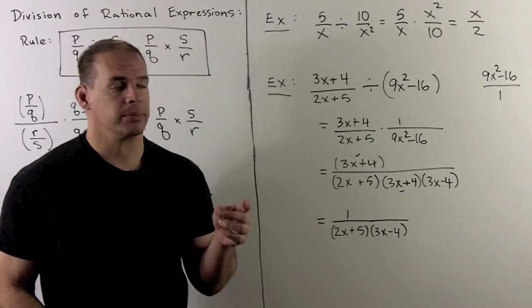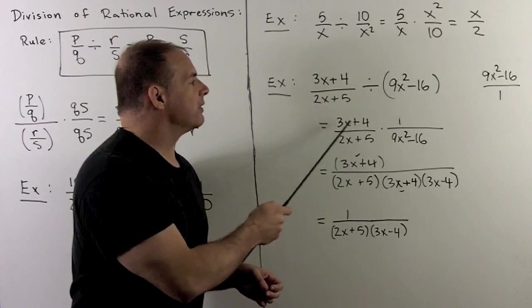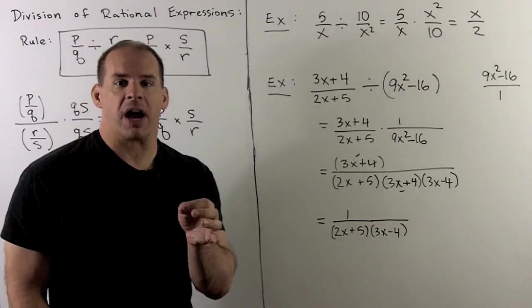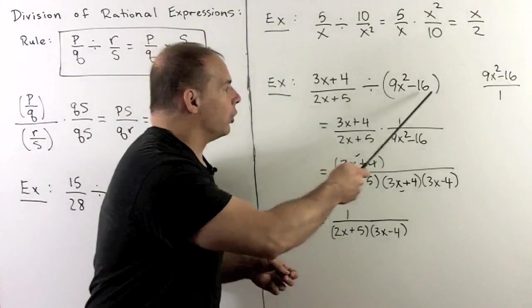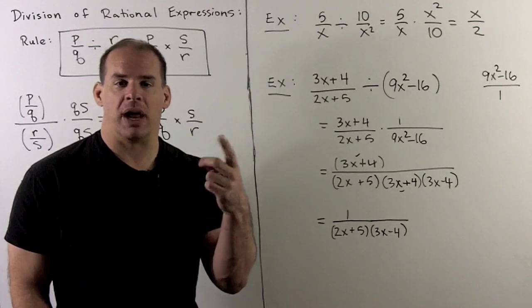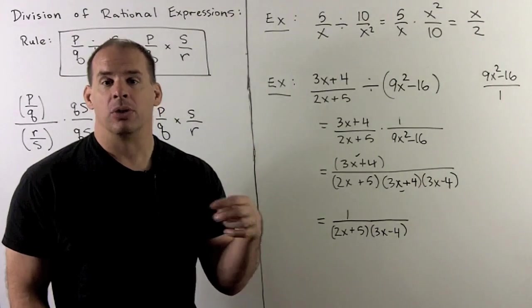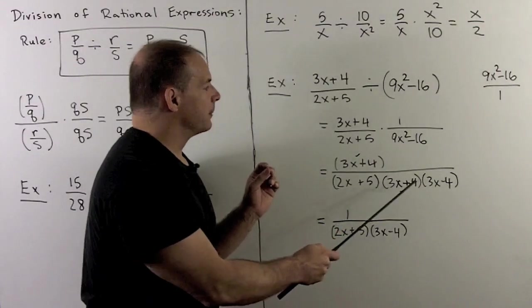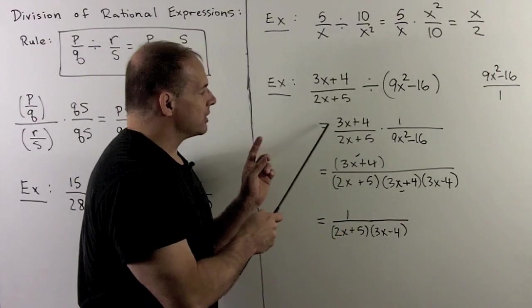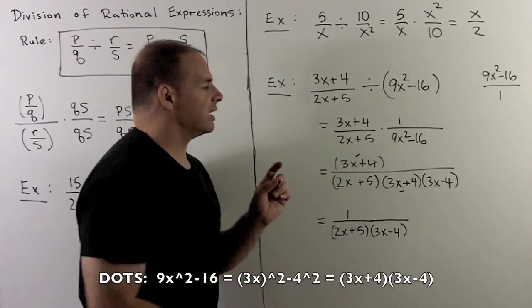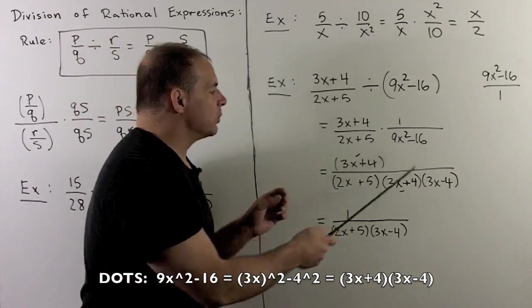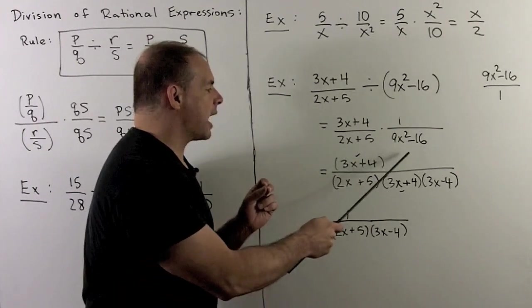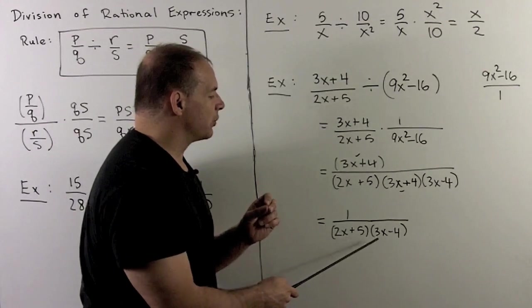Moving up to polynomials, let's try 3x plus 4 over 2x plus 5 divided by 9x squared minus 16. Now note, 9x squared minus 16, not in fraction form, but not a problem. If we take any polynomial, that's a rational expression by putting it over 1. So anything over 1 is equal to anything. The reciprocal, then, is 1 over 9x squared minus 16. We multiply, then we factor completely. Here, 9x squared minus 16 is a difference of two squares. When I factor this, we get 3x plus 4 times 3x minus 4. We cancel the 3x plus 4s. That leaves me with a 1 up top. What's left over? We have 1 over 2x plus 5 times 3x minus 4.